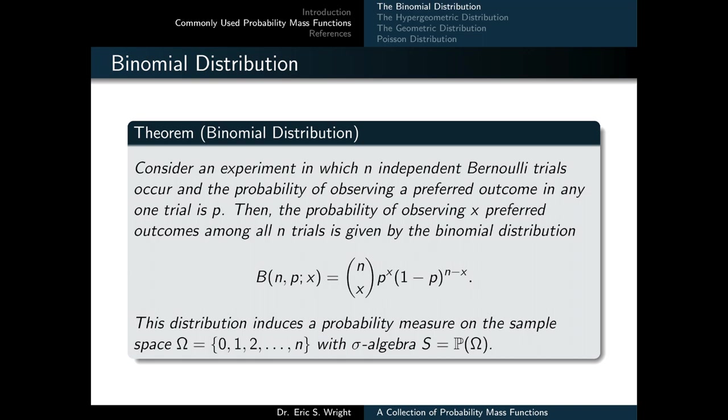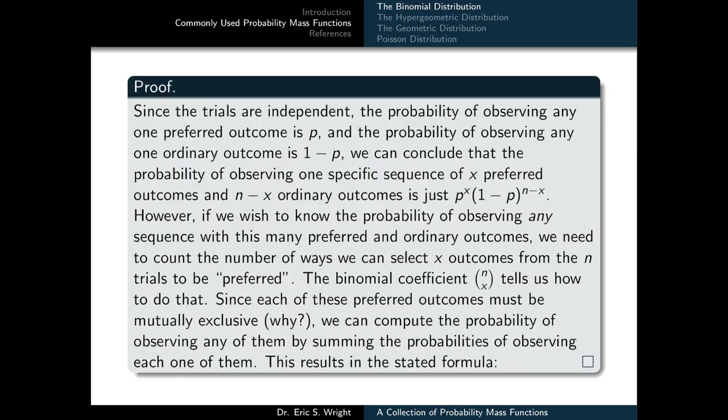The formula is n choose x times p to the power of x times the quantity 1 minus p raised to the power of n minus x. This distribution induces a probability measure on the sample space omega equaling the values 0, 1, 2, 3, all the way up through n, with a sigma algebra of s equal to the power set of omega. The conditions for it to be a probability mass function are: it must take on non-negative values for any x in the sample space, and summing over all possible values of x must yield one.